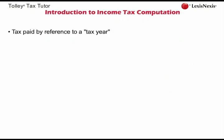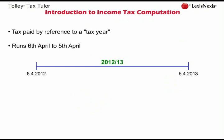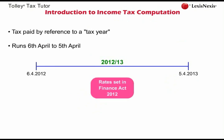Individuals pay income tax by reference to the tax year. The UK tax year runs from the 6th of April to the following 5th of April. For example, the tax year that begins on the 6th of April 2012 and ends on the 5th of April 2013 is known as the tax year 2012-13. The tax rates and tax allowances for the 2012-13 tax year were set in the Finance Act 2012. In this course we will be preparing income tax computations for the 2012-13 tax year and will be looking at tax law as it stands up to and including the Finance Act 2012.